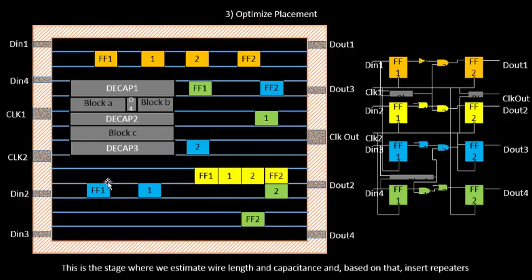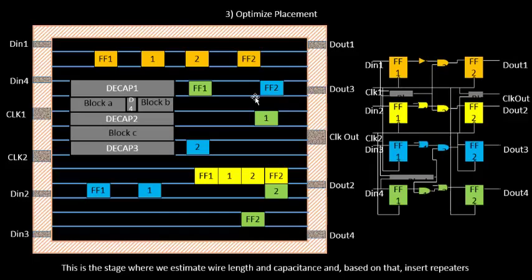Repeaters are basically buffers that recondition your original signal, make a new signal that replicates the original, and send it again. This repeater will again reproduce its original signal and send it to the following stage, maintaining signal integrity. We solve the problem of signal integrity by adding extra repeaters or buffers, but there is a loss of area — more repeaters means more area occupied on the floor plan. That is a tradeoff we have to live with if we want to retain signal integrity.